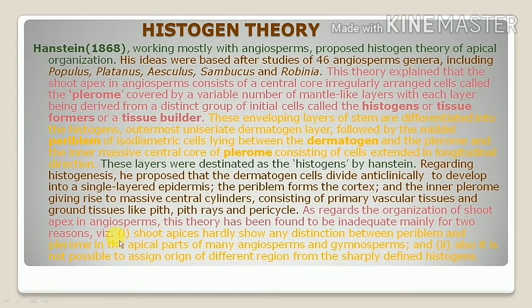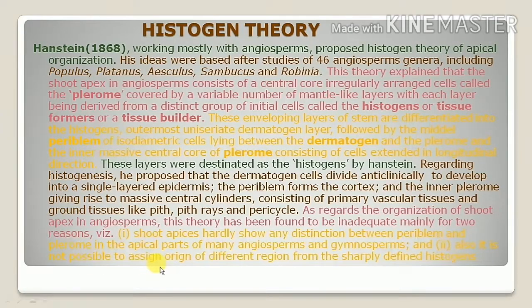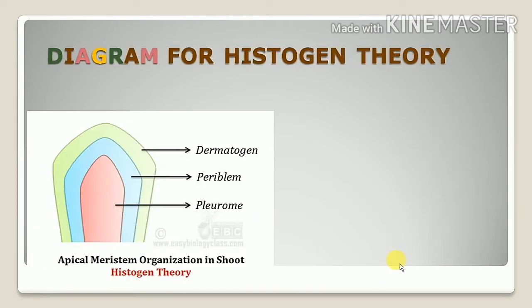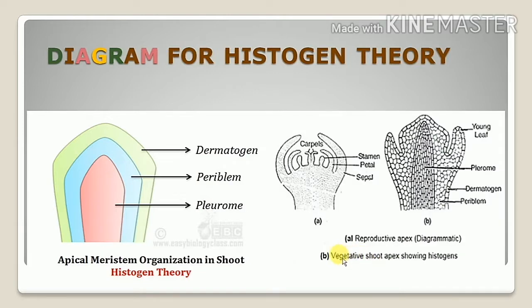As regards the organization of shoot apex in angiosperms, this theory has been found to be inadequate mainly for two reasons: shoot apexes hardly show any distinction between periblem and plerome in apical parts of many angiosperms and gymnosperms, and it is not possible to assign the origin of different areas from sharply defined histogens. The diagram for histogen theory shows three layers: dermatogen, periblem, and plerome.